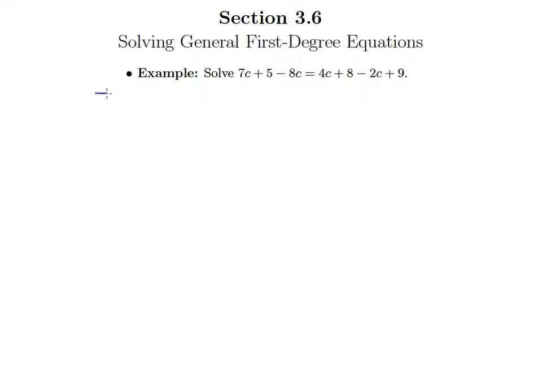So the only thing that's going to change here, I'm just rewriting this to give us more room to start with, is that before we want to try getting the variable terms on one side and the constant terms on the other, like we know we're supposed to do, we want to simplify both sides of our equation first.